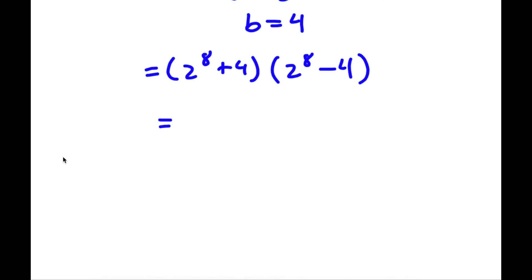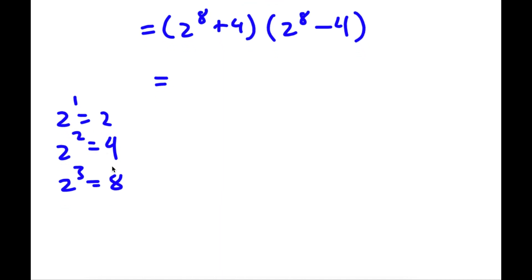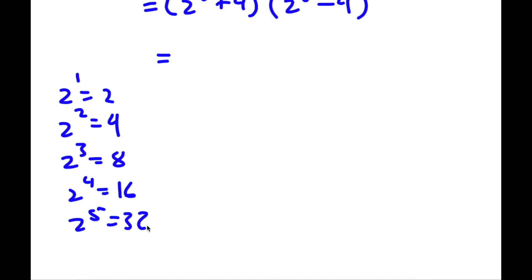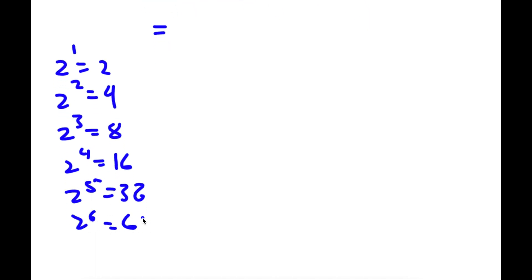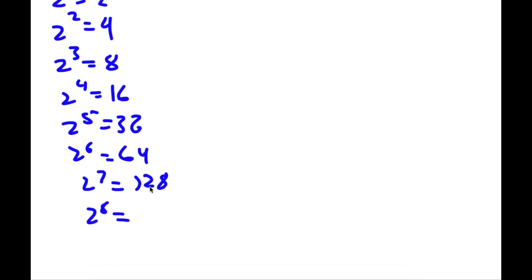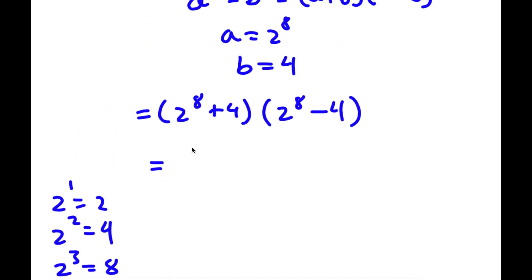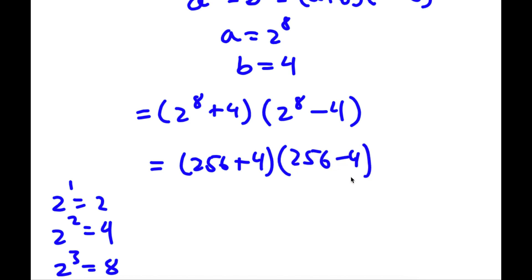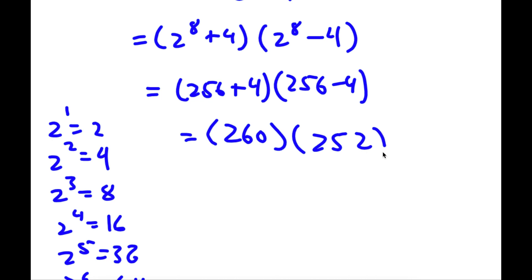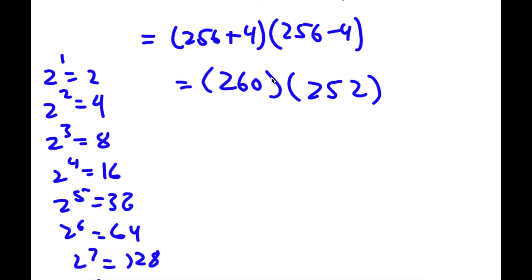Now 2 to the power of 8: 2 to the power of 1 is 2, 2 squared is 4, 2 cubed is 8 — it just doubles. 2 to the 4th is 16, 2 to the 5th is 32, 2 to the 6th is 64, 2 to the 7th is 128, and 2 to the 8th is double 128, which is 256. So now I have (256 plus 4) times (256 minus 4), which is 260 times 252.